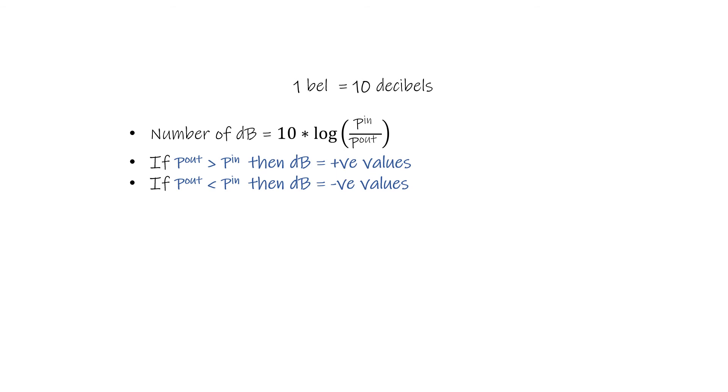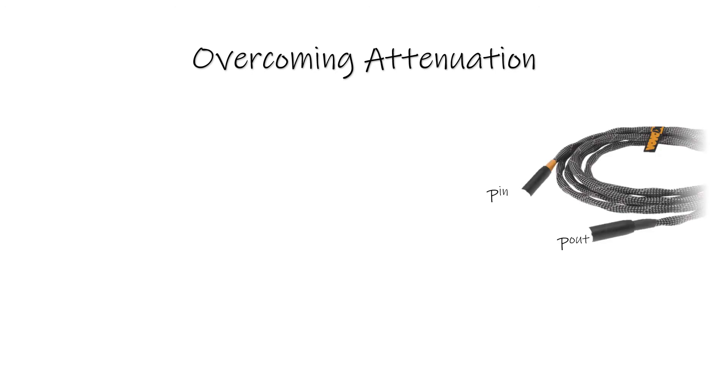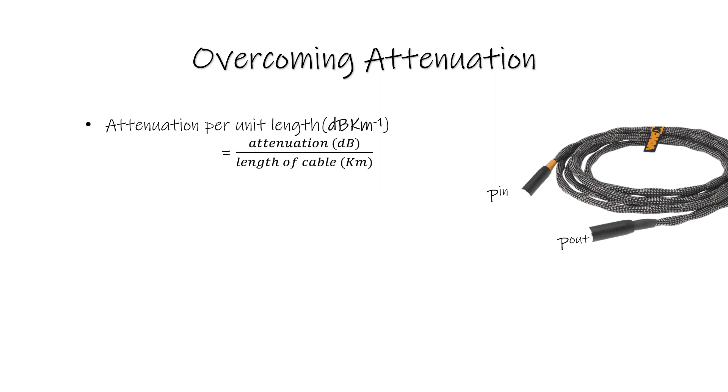How do we overcome attenuation? Attenuation means overcoming the loss of power. This is the same cable as before. We have attenuation per unit length, which has units of decibels per kilometer. The formula is attenuation in dB over length of cable. By this formula you could do numerical calculations of attenuation per unit length.